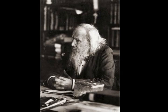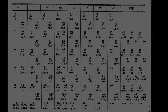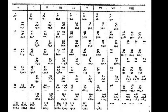Today, all the first 118 elements are known, completing the first seven rows of the table, but chemical characterization is still needed for the heaviest elements to confirm that their properties match their positions. It is not yet known how far the table will stretch beyond these seven rows and whether the patterns of the known part of the table will continue into this unknown region.